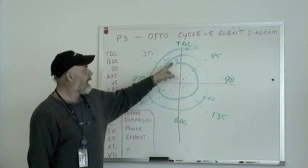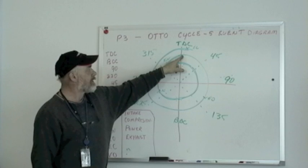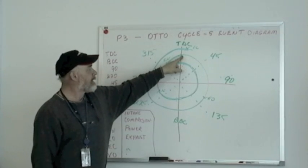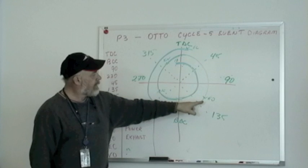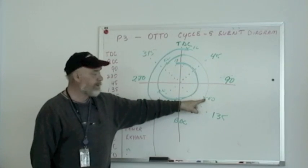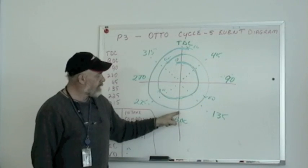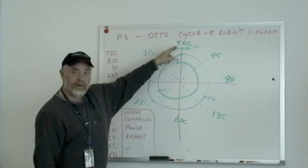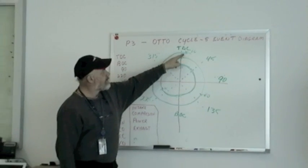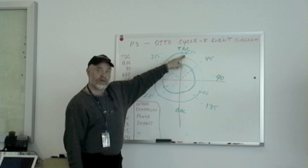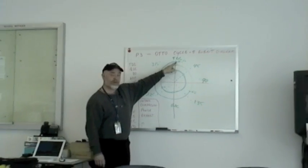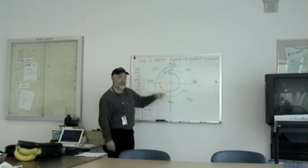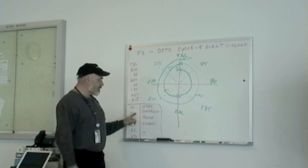The exhaust valve is open 60 degrees before bottom dead center, continues through 180 degrees, and 10 degrees after top dead center — so the exhaust valve is open for 250 degrees. We've now placed all the events on the diagram.